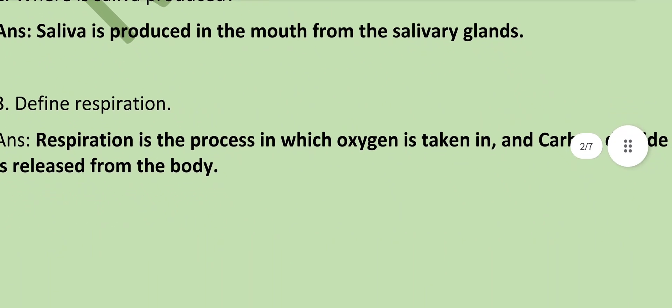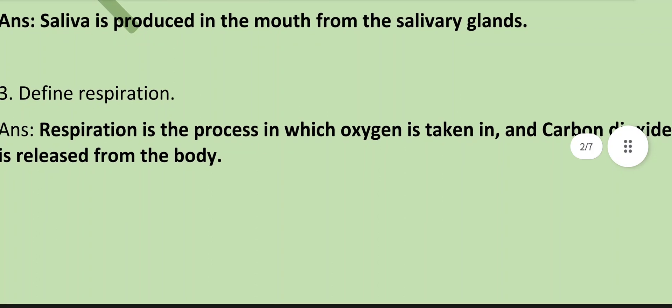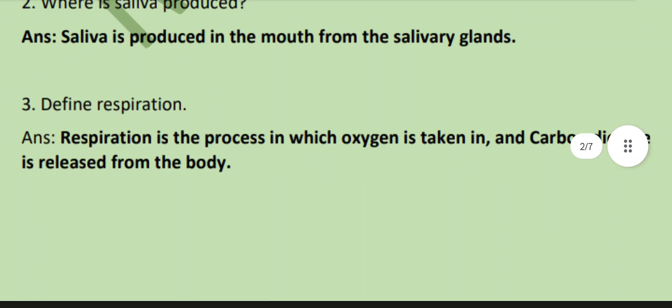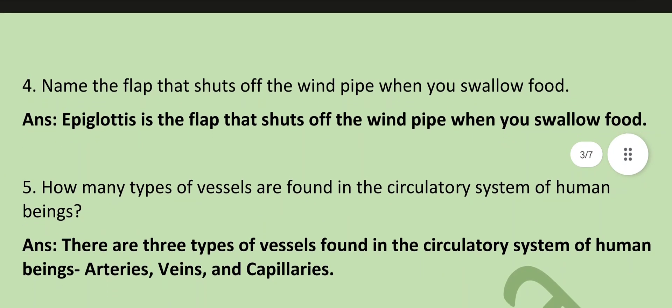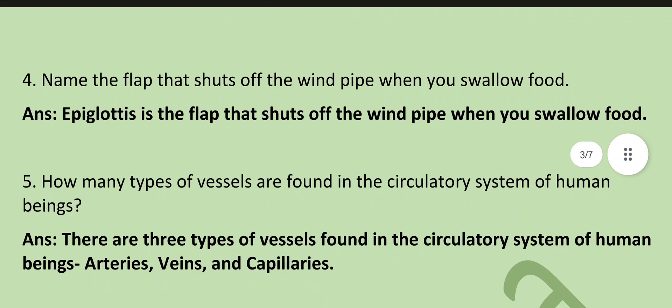Define respiration: Respiration is the process in which oxygen is taken in and carbon dioxide is released from the body. Name the flap that shuts off the windpipe when you swallow food: the epiglottis is the flap that shuts off the windpipe when you swallow food.